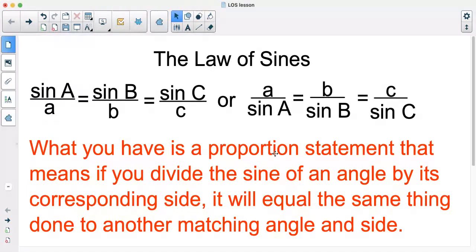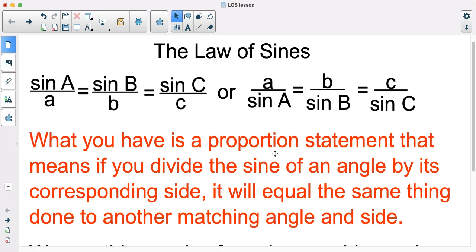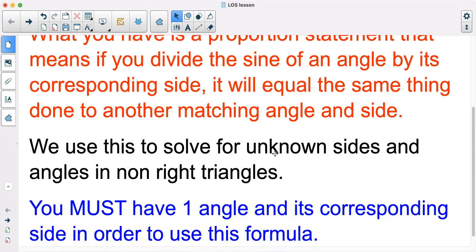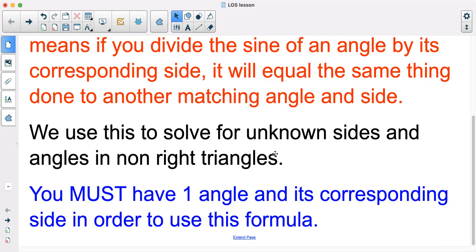The really neat part about it is it lets us solve for missing pieces of triangles that we would not have been able to otherwise because they're not right triangles. So we're talking about like the Pythagorean theorem and doing the basic sine, cosine, and stuff like that you've done with right triangles. This will actually let us do this for any triangle because of this proportion.